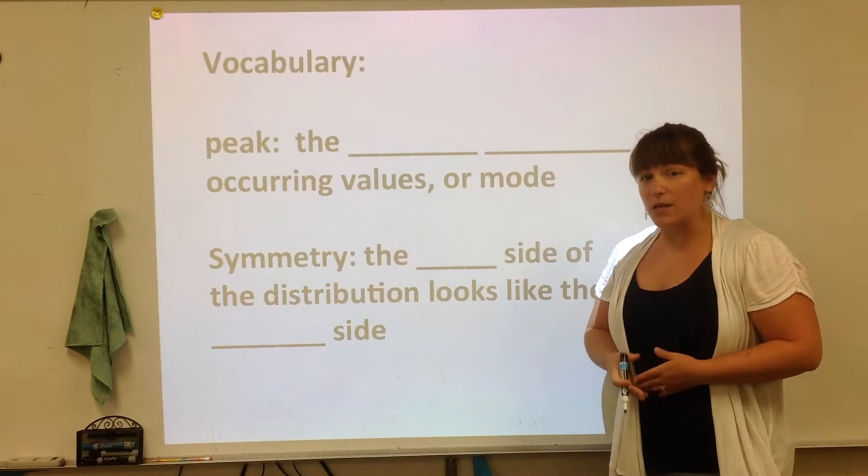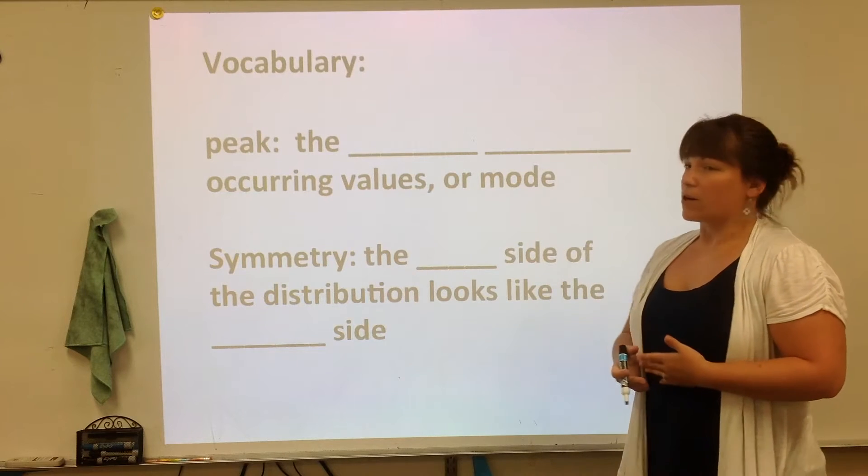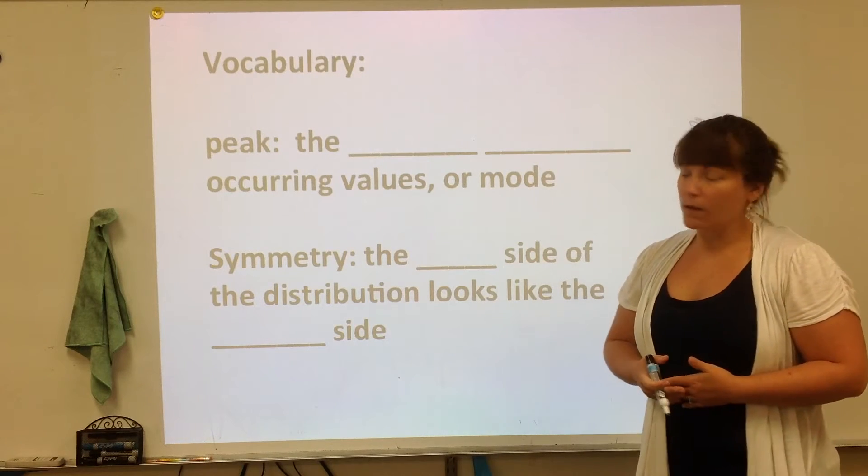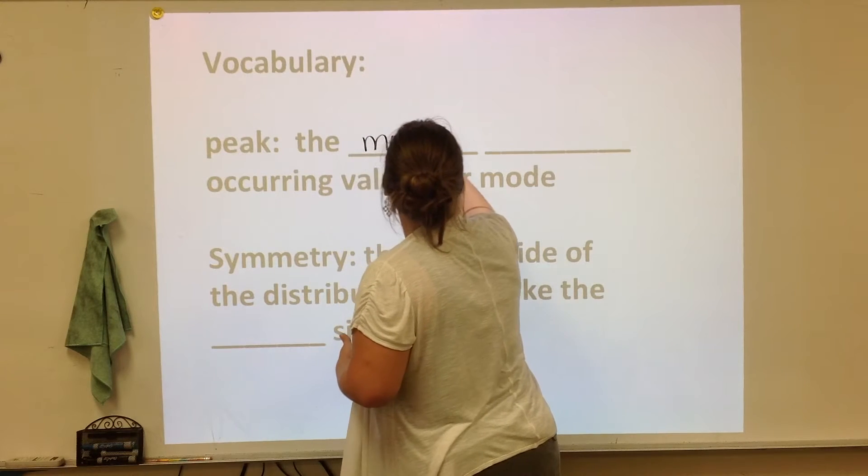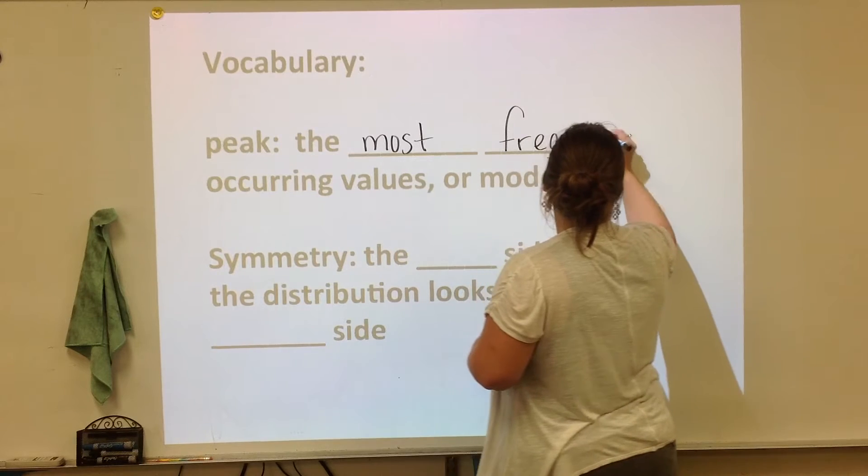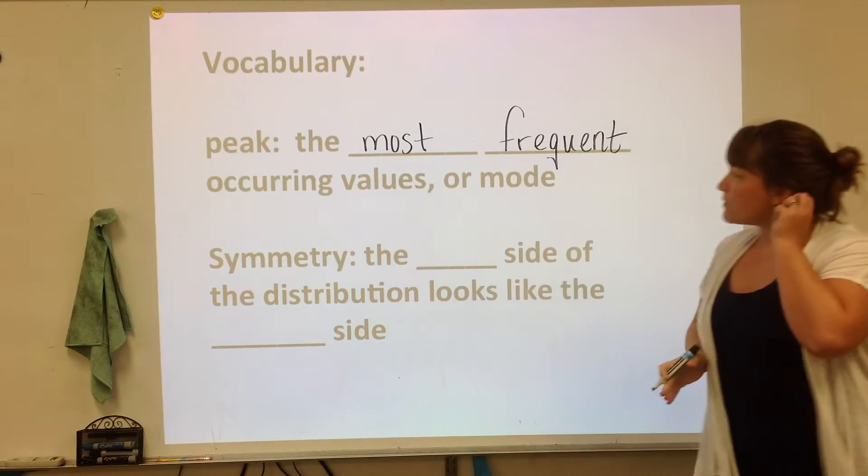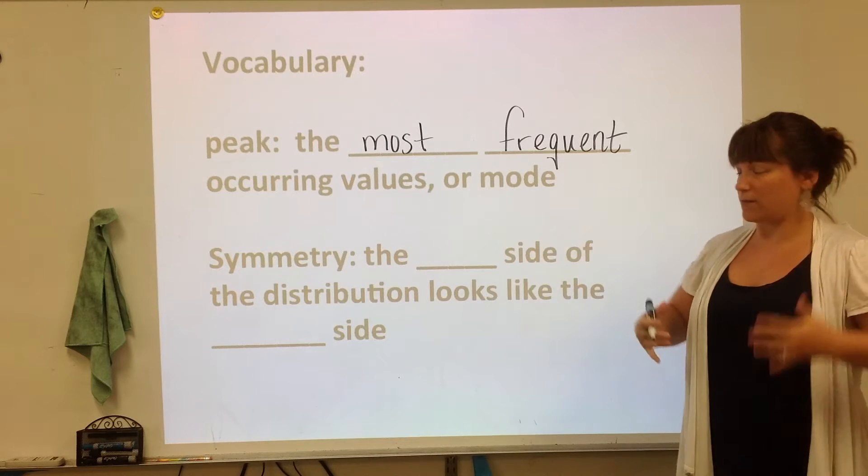The next word is a peak. The peak is the most frequent occurring value. So let's fill that in. The most frequent occurring value. It actually is the mode. It's going to be the highest if it's a line plot, or the tallest bar if it's a histogram or a bar graph.